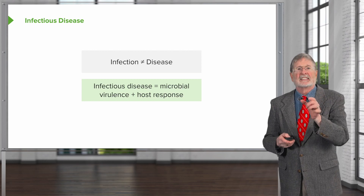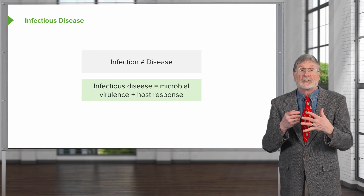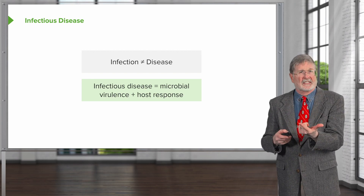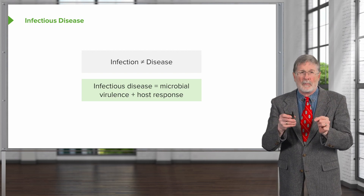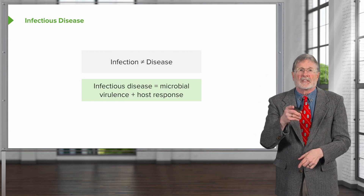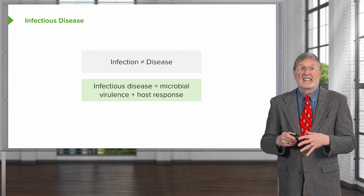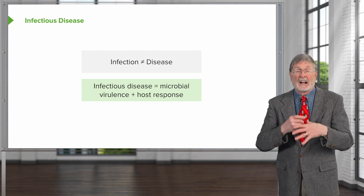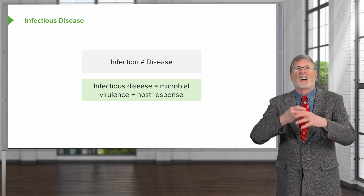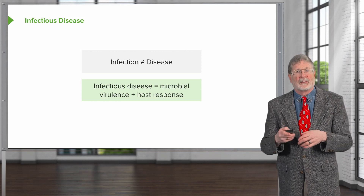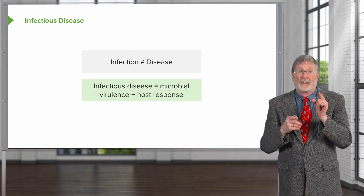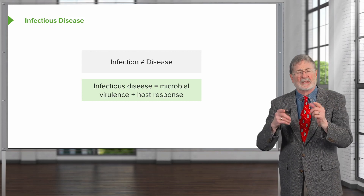Instead, a way to think about this is that infectious disease — pathology associated with an infection — is due to a combination of microbial virulence, things that they do that make them particularly injurious, plus the host response. In many cases, if we leave a microbe alone it causes no pathology. But if we have a very aggressive host response, we can get a lot of collateral damage from all those inflammatory mediators. Keep this in mind and the rest is just details — cool details, but just details.